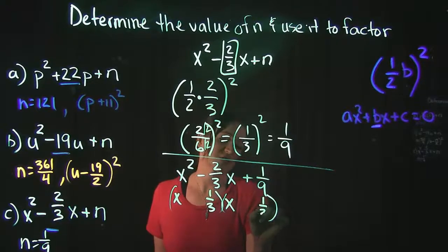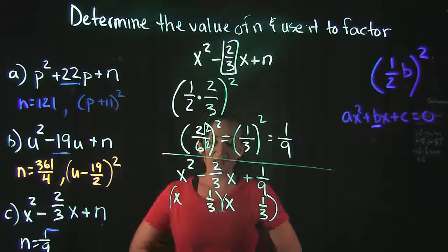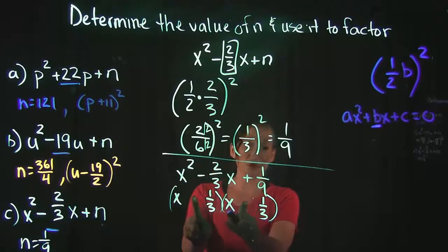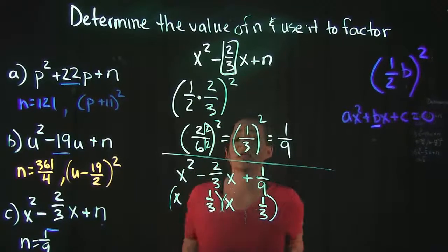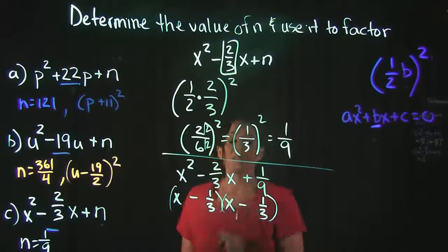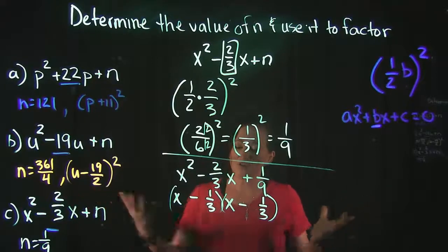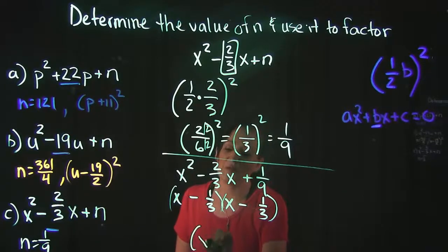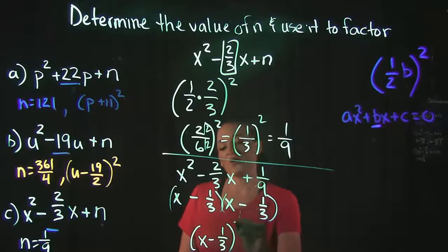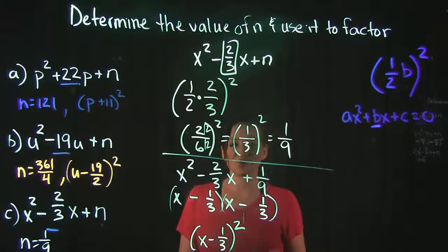And looking at our signs, remember, since these factors are both the same, they're either both going to be positive or they're both going to be negative. Because we have the negative term here, we know that this is going to be our minus minus combination. And since they are the same exact factor, we can combine them into one, saying x minus one third squared, since we have two of them.